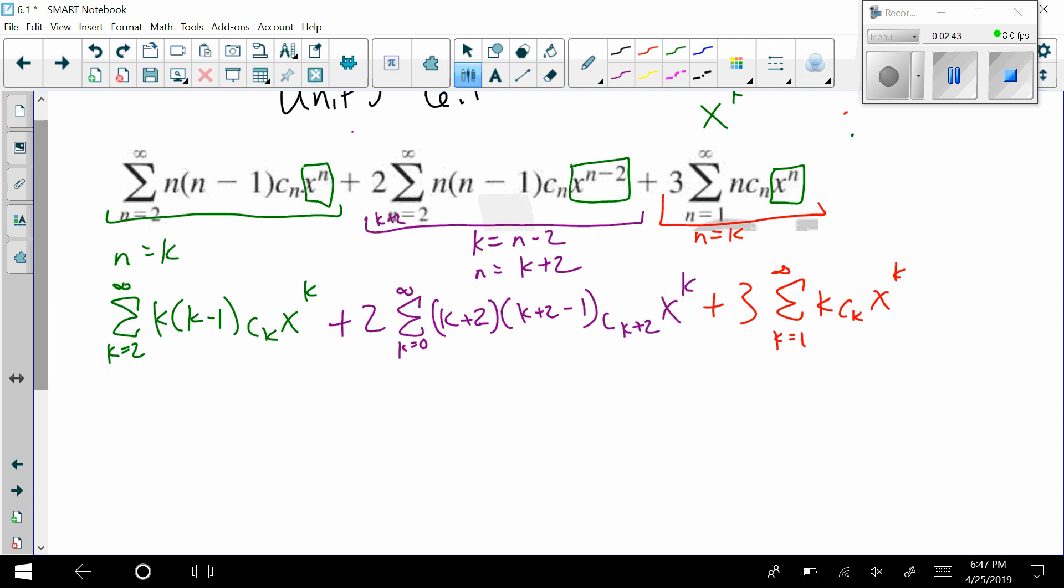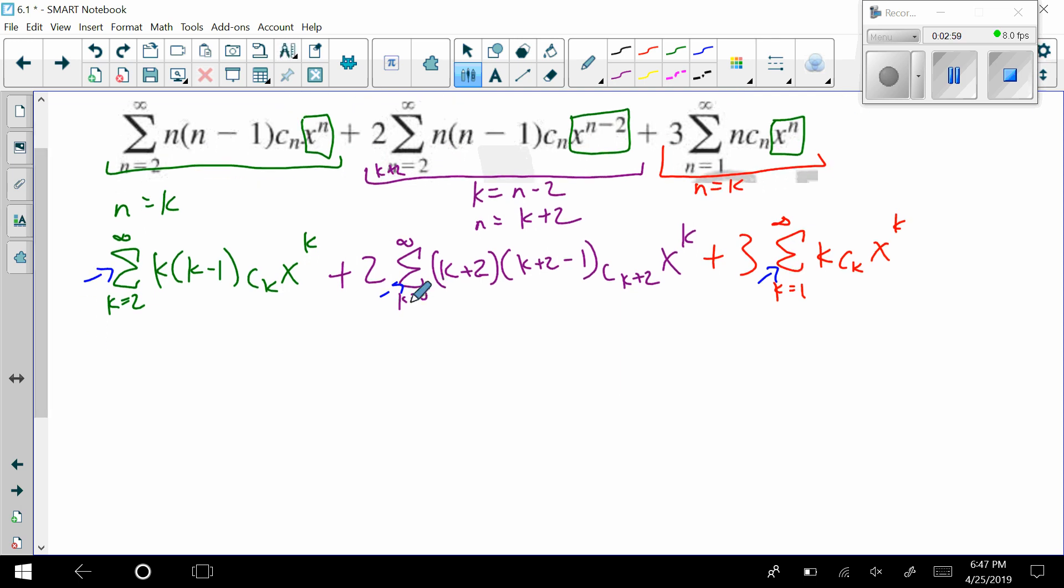Now, if you remember from the last time, I want a single summation. So right now we have 1, 2, and 3 summations. And in order to just make it one summation, I have to have the indexes match. The indices have to match. Here I have a k equals 2. I can't move that down to 0, just like I can't move 1 down to 0. But what I can do is I can turn this 0 into a 2, and I can turn this 1 into the 2.